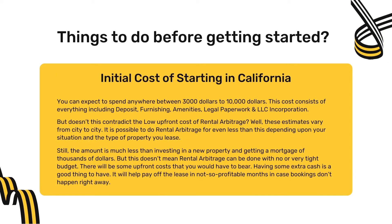Thing number three: the initial cost of starting rental arbitrage in California. You can expect to spend anywhere between $3,000 to $10,000, covering deposit, furnishing, amenities, legal paperwork, and LLC incorporation. These estimates vary by city, and it's possible to spend less depending on your situation and property type. The amount is still much less than buying a property and getting a mortgage. Having extra cash on hand is wise — it helps pay the lease during slow months when bookings don't happen right away.